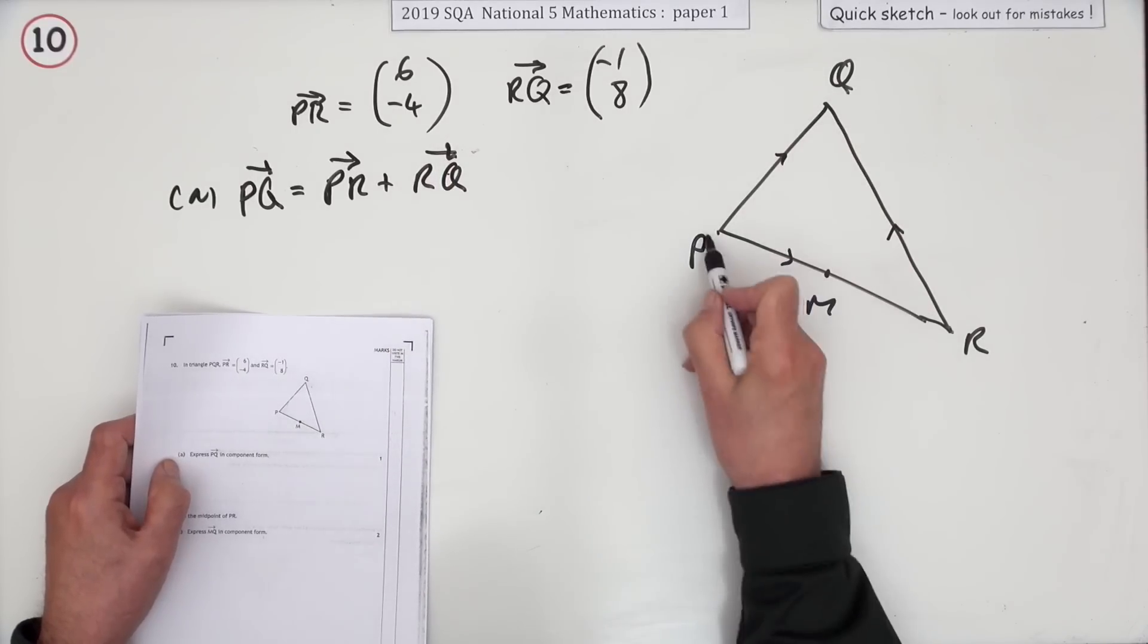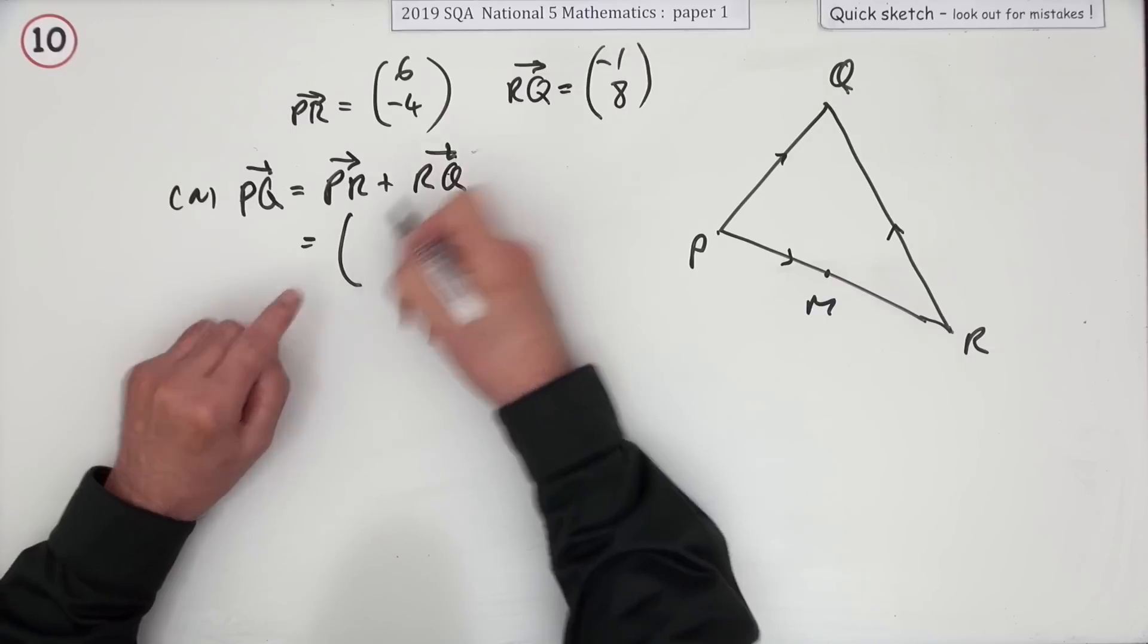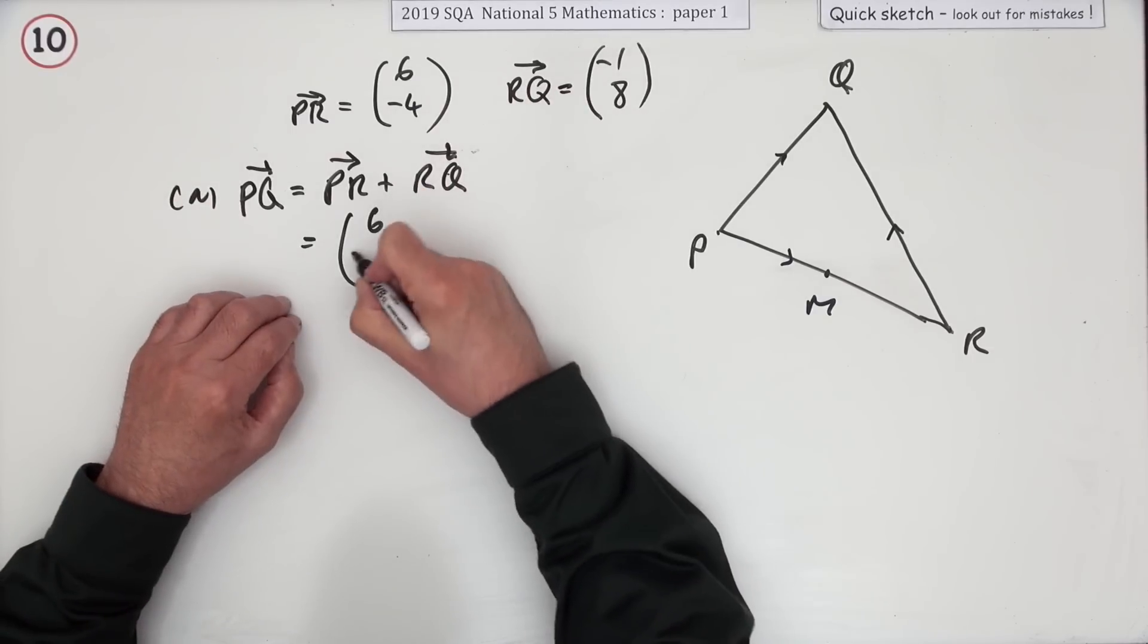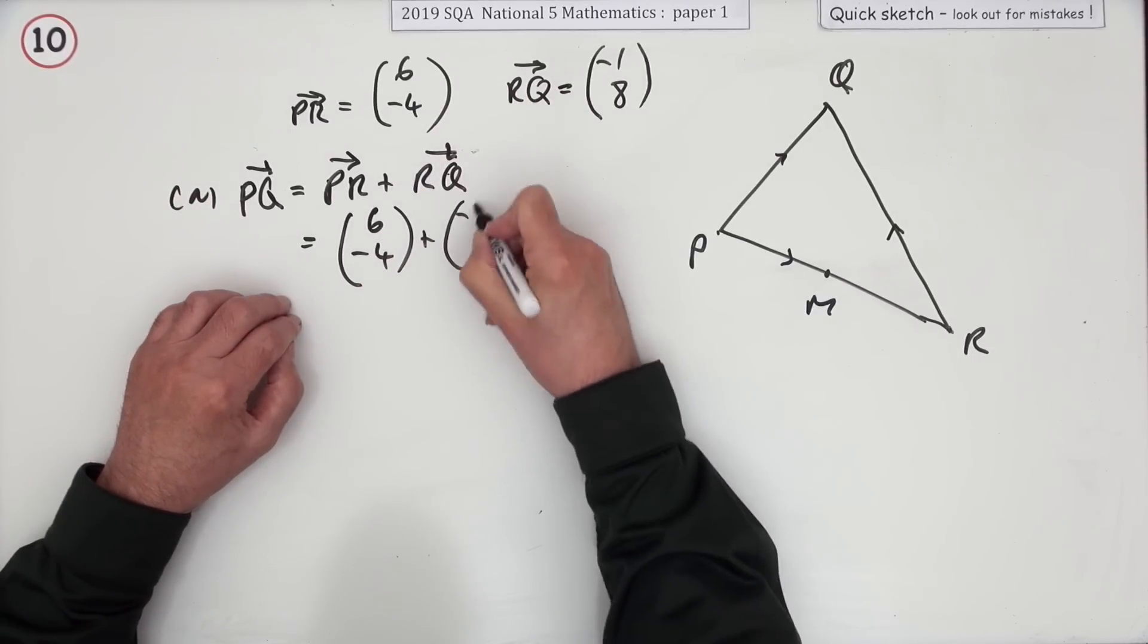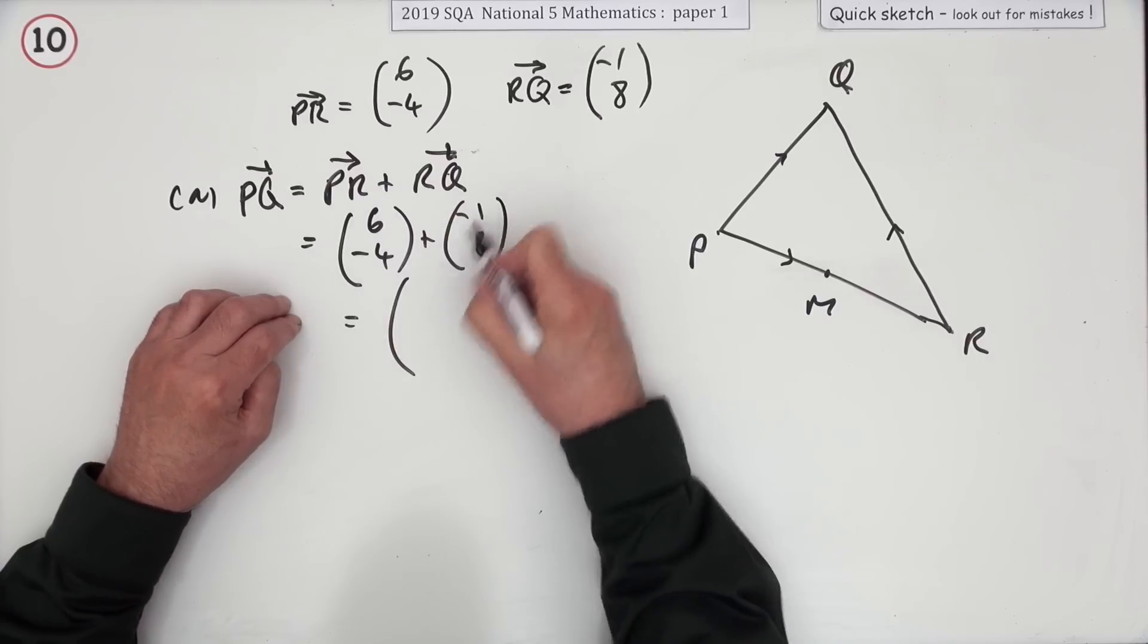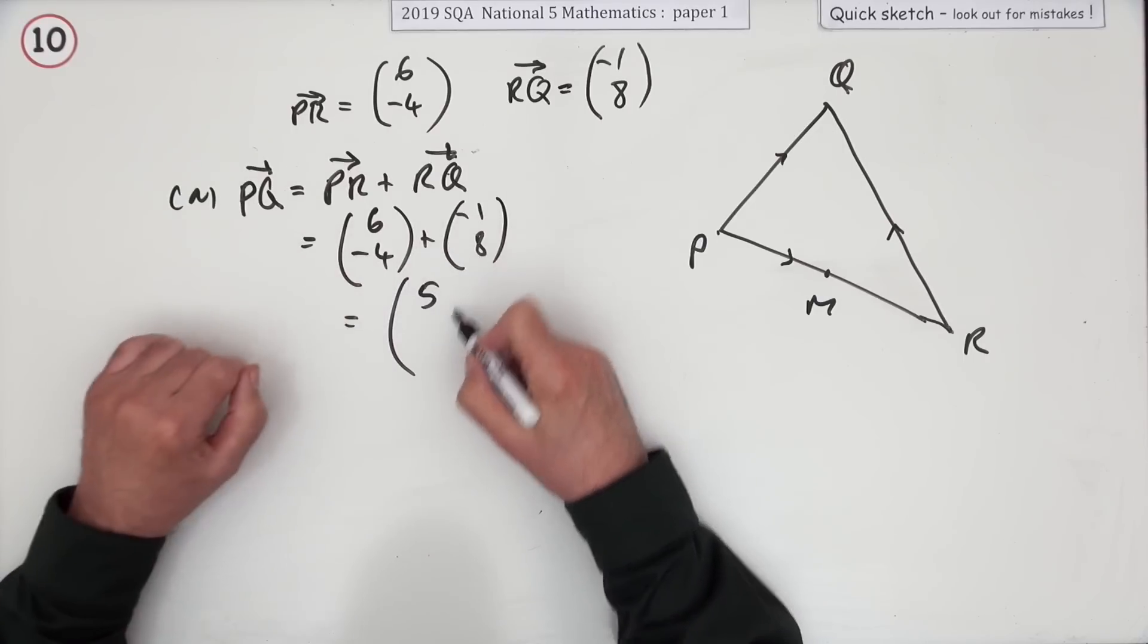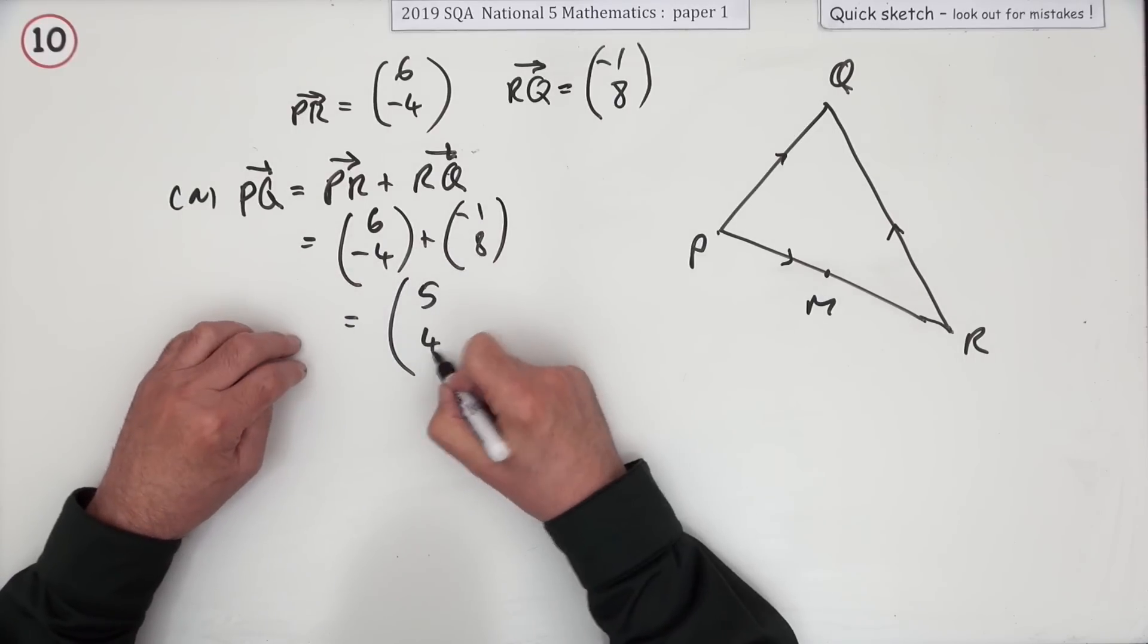In order to find that, you take the long way around because you know these two. You can even just add them in your head on the spot there: (6, -4) and (-1, 8). So that's going to be adding the x components, 5, and adding the y components, -4 and 8, which is 4.